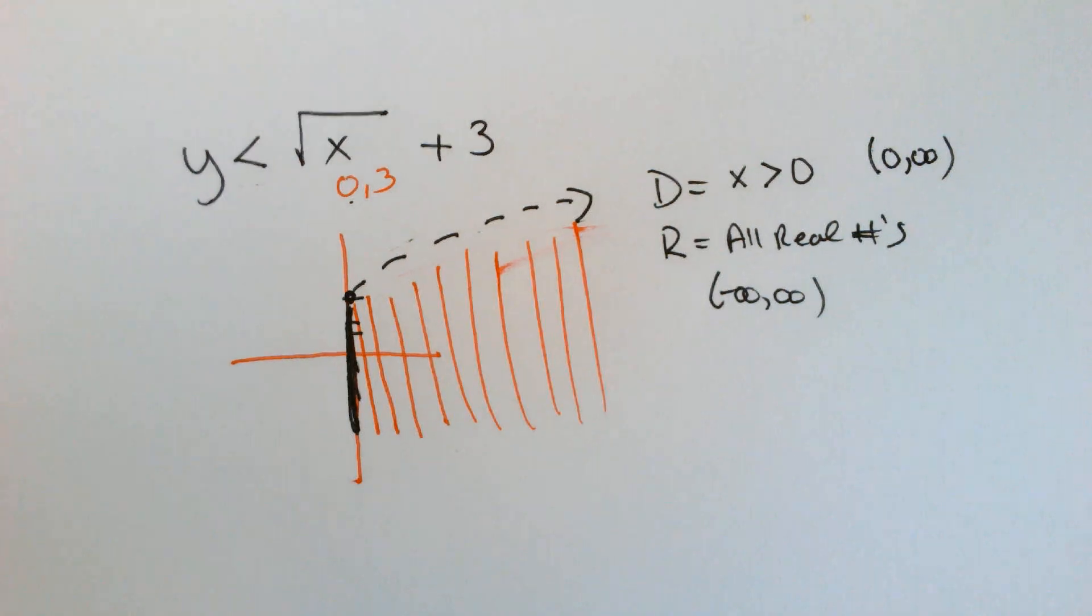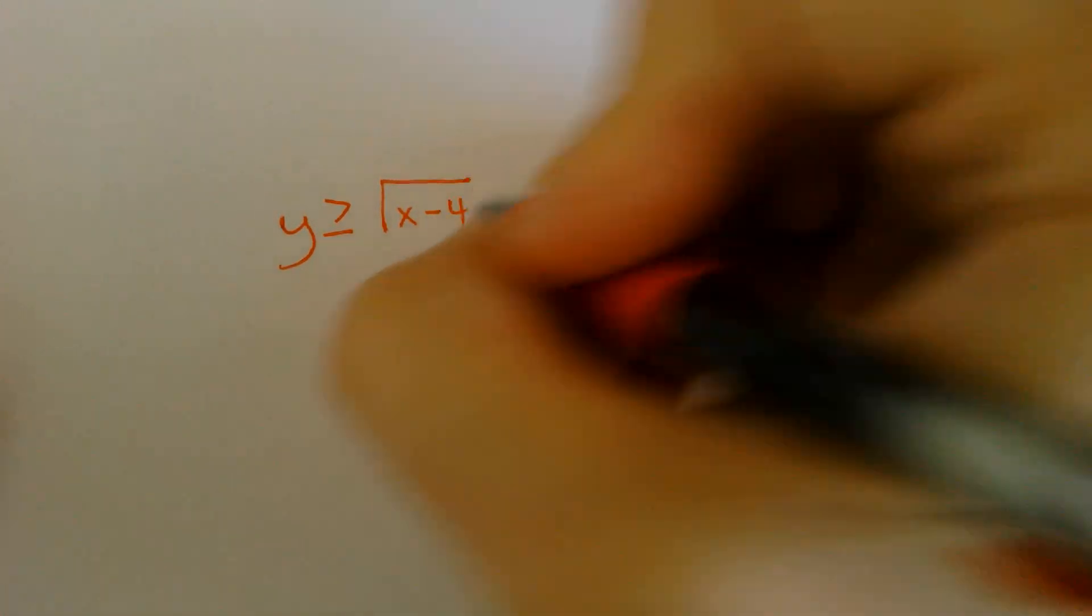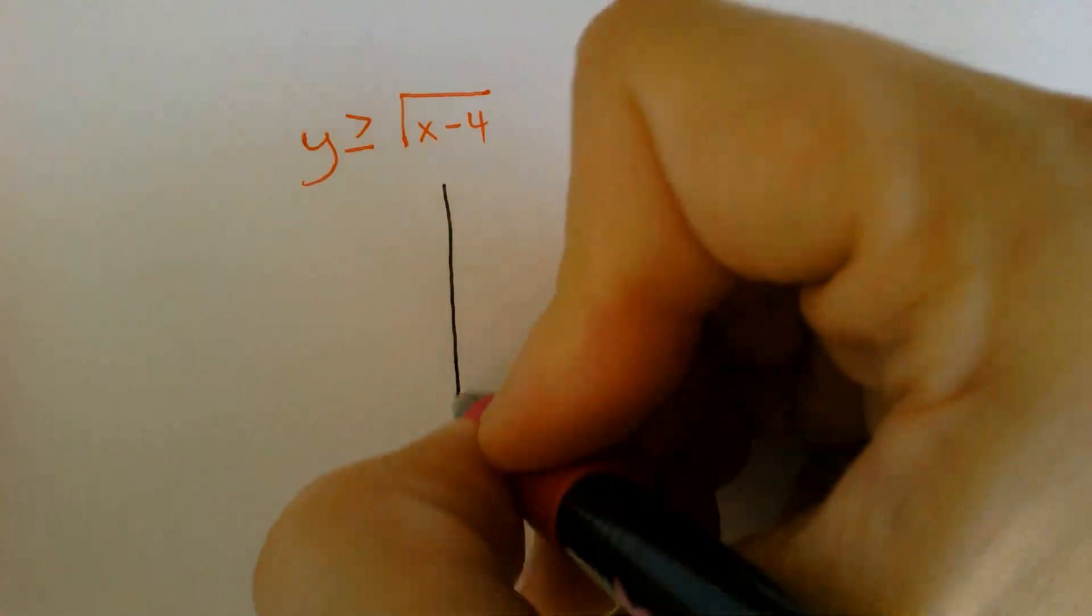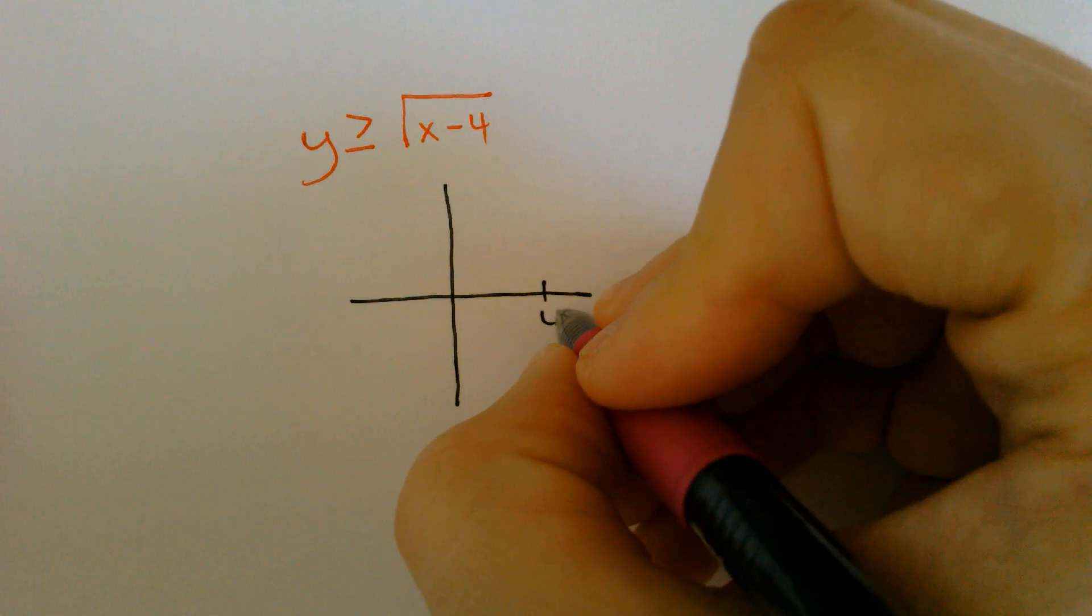Another one. Let's do it. Let's say we have y is greater than or equal to the square root of x minus 4. It would be change the sign, keep the sign, 4.